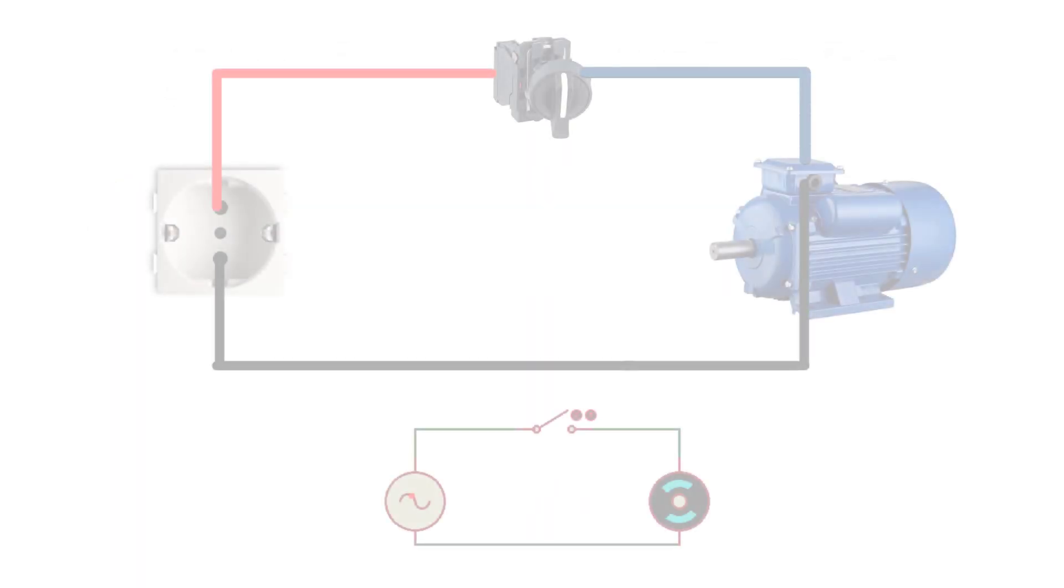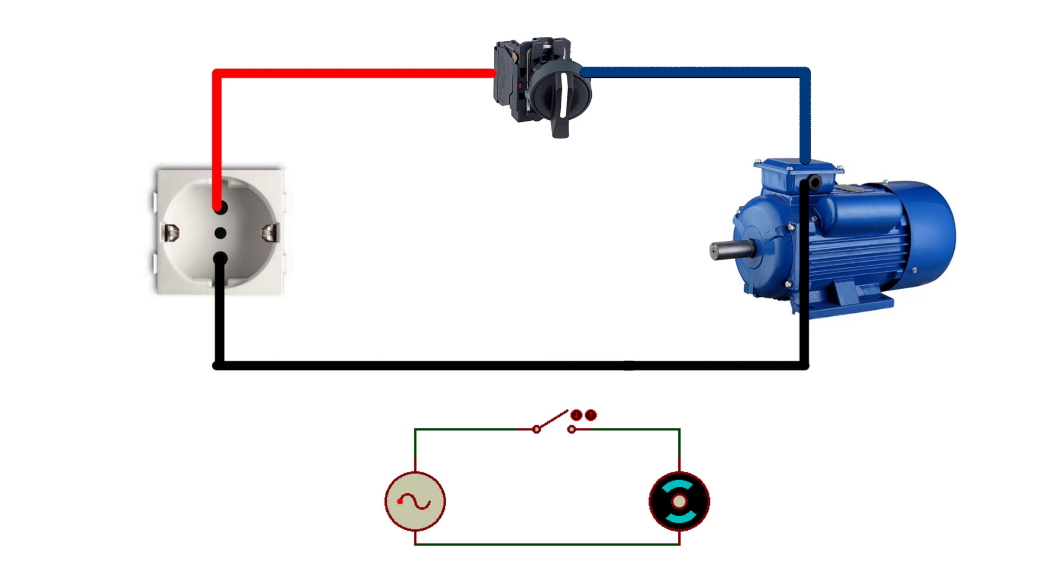For example, in this simple circuit, we have a single phase AC 220V power source, a single phase motor, and a switch. This switch is considered as the control port. Press the switch to turn it on, and the power will supply the motor.